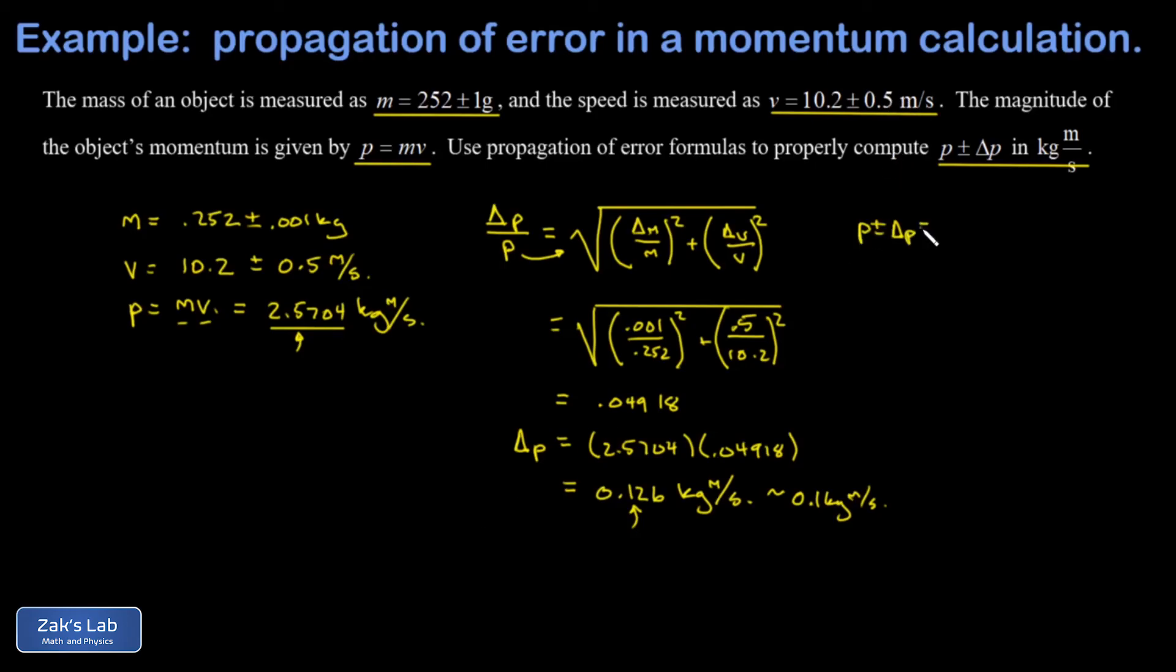And we arrive at p plus or minus delta p: that's a momentum of 2.6 plus or minus 0.1 kilogram meters per second, and we're done.